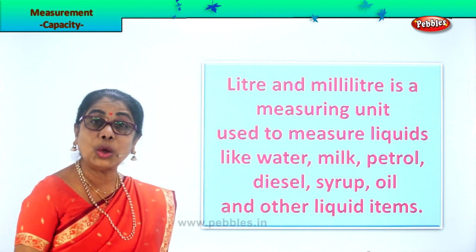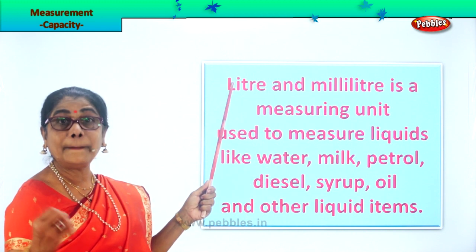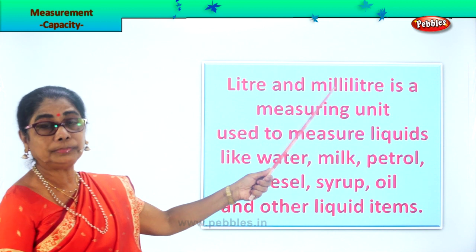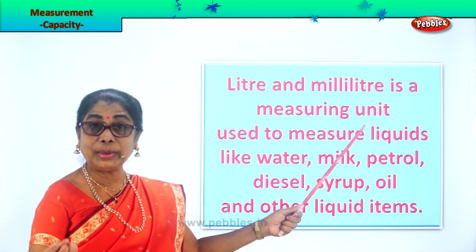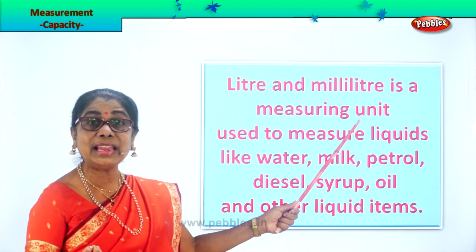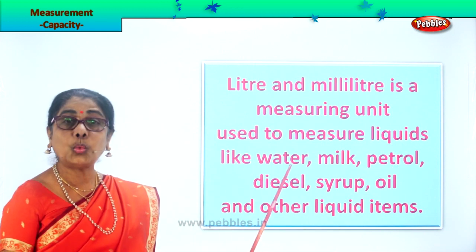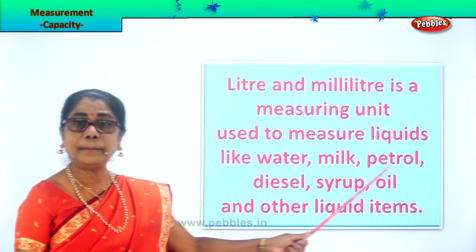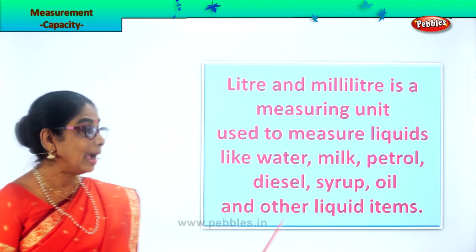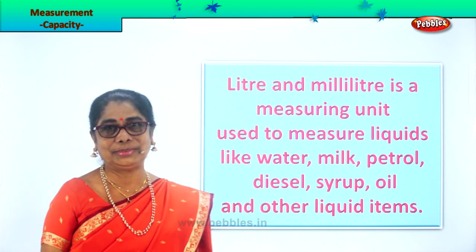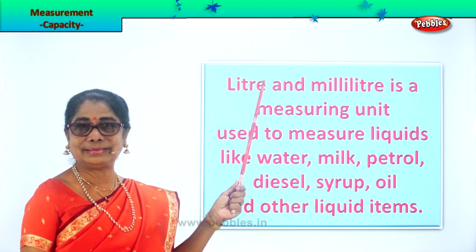Let's read what's here. Read with me: liter and milliliter. Liter is the big measurement, milliliter is the smaller. Liter and milliliter are measuring units for liquids. They are used to measure liquids like water, milk, petrol, diesel, syrup, oil, and other liquid items. So all liquid items you measure in milliliter and liter.